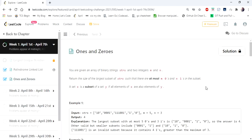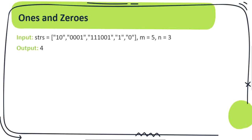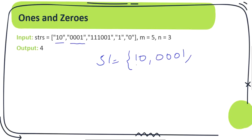Let's see how we are going to approach this problem. Here is the given input string array and we have to form a subset consisting of at most five zeros and three ones. Let's consider subset one — it's going to have the strings '10000' and '1', so far we have made two ones and four zeros.